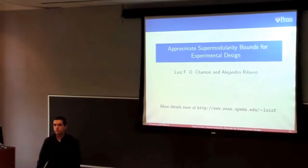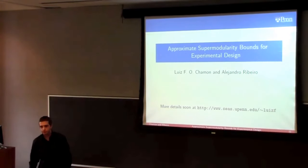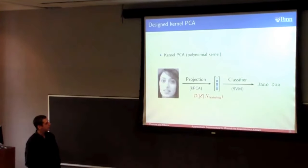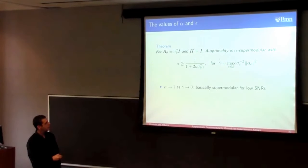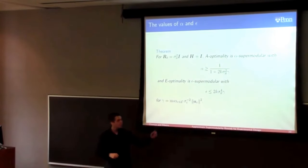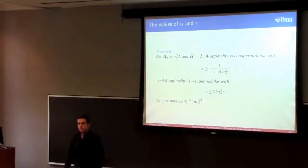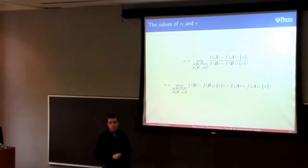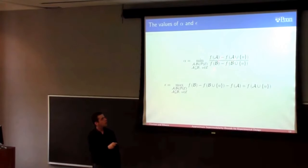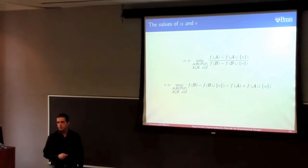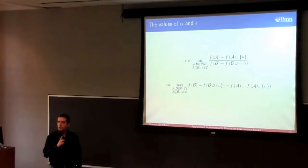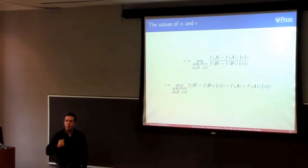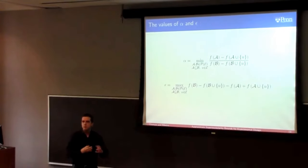Q: So those alphas and epsilons will depend on the data you have? A: Alpha and epsilon do depend on the SNR — gamma — which depends on your priors and your experiments, not specifically on the observed data. In the MSE case, for example, it only depends on the priors, which in a sense are the data. But since we assume priors are given, it depends on the priors but not on the specific data you observe, like the movie ratings themselves.